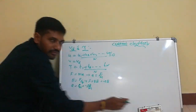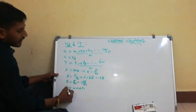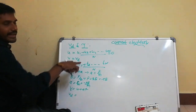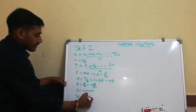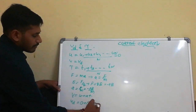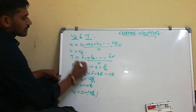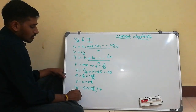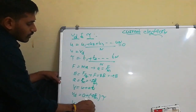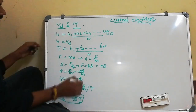Substituting into the first equation of motion: V = U + AT. The final velocity is the drift velocity Vd, and the initial velocity before applying the electric field is zero. The acceleration is -eE/m and the time period equals the relaxation time tau. So Vd = -(eE/m) × tau. This is the relation between drift velocity and relaxation time.